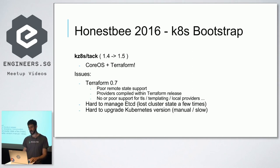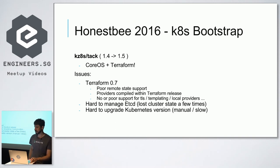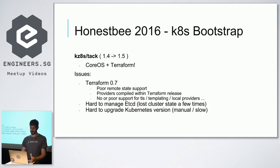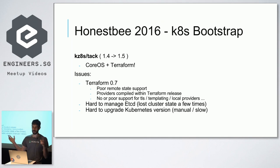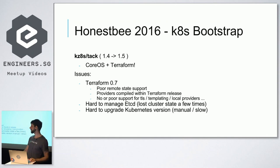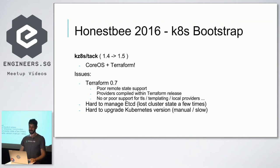Then we started with a project called TAC — which is a term in sailing when you tack from one side to the other. I even wrote an internal Confluence article with pictures of ships going across board. This project used CoreOS and Terraform, so that was right. We really loved it.